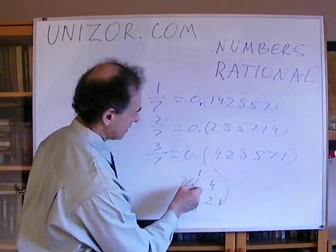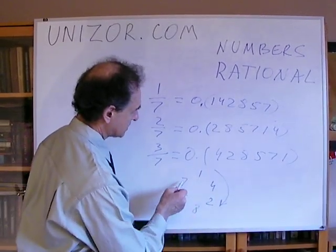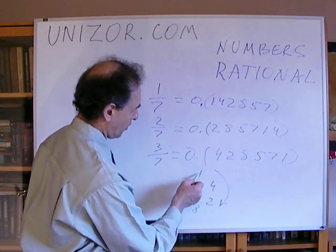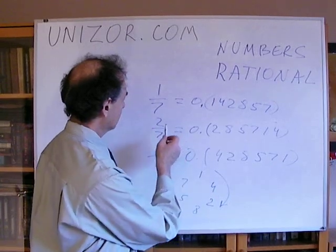So, one-seventh is 0.142857 in period. Two-sevenths is 0.285714 in period.